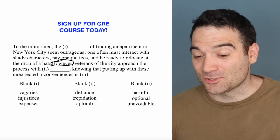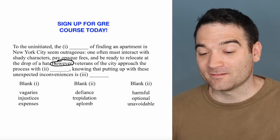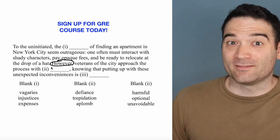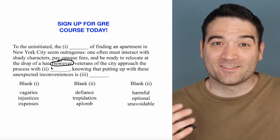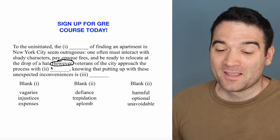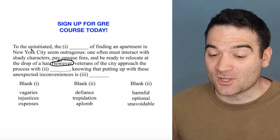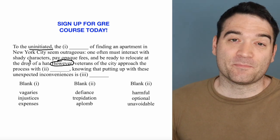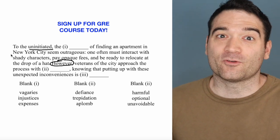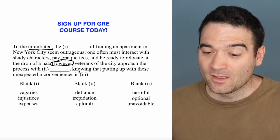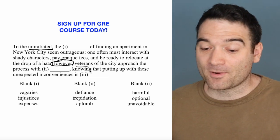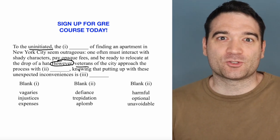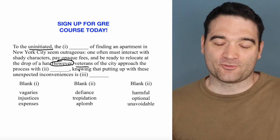Let's start with the most important word in here, which is 'however.' That sets up a contrast between the first part and the second part. The first part is talking about the uninitiated — people who aren't from New York City — whereas the second part is talking about the veterans of the city. So we have this sort of contrasting setup.